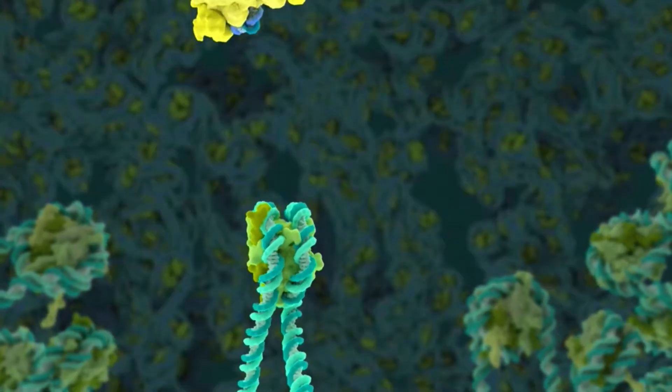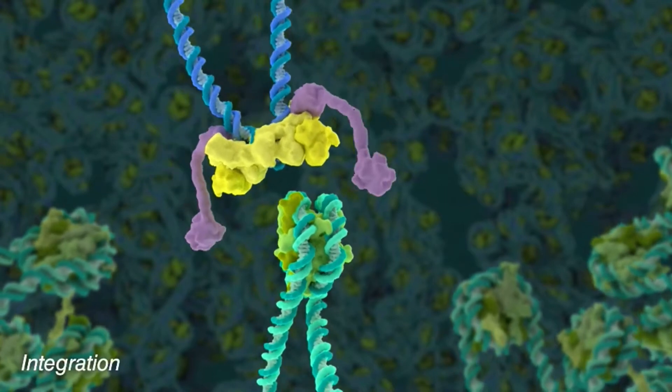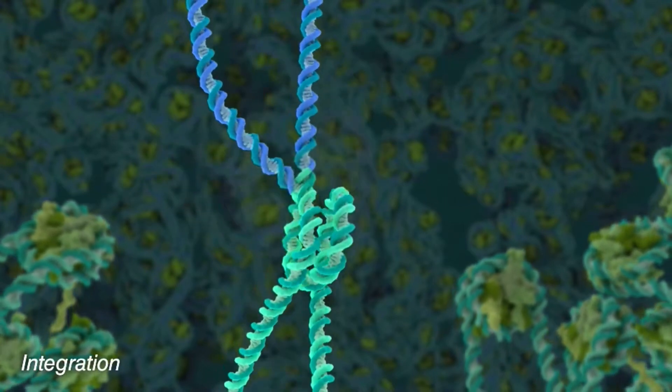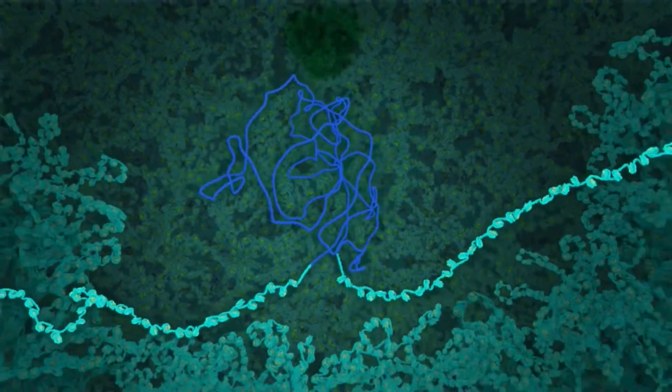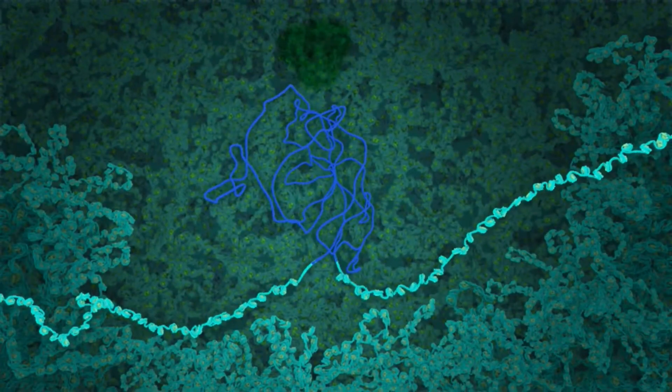Inside the nucleus, integrase binds to cellular DNA, cuts it, and inserts the viral DNA. The viral DNA, or provirus, can become active immediately or remain dormant for days, weeks, or even years.